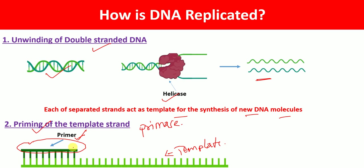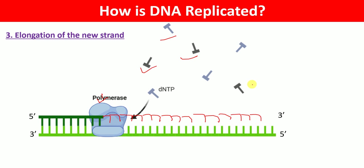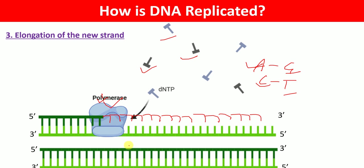Once the primer is added to the template strand, the enzyme called DNA polymerase starts adding nucleotides — A, G, C, T — continuously in the five prime to three prime direction. The nucleotides added should be complementary to each other: adenine with thymine and cytosine with guanine. Once the addition of complementary bases is completed by DNA polymerase, we will have a new DNA molecule.